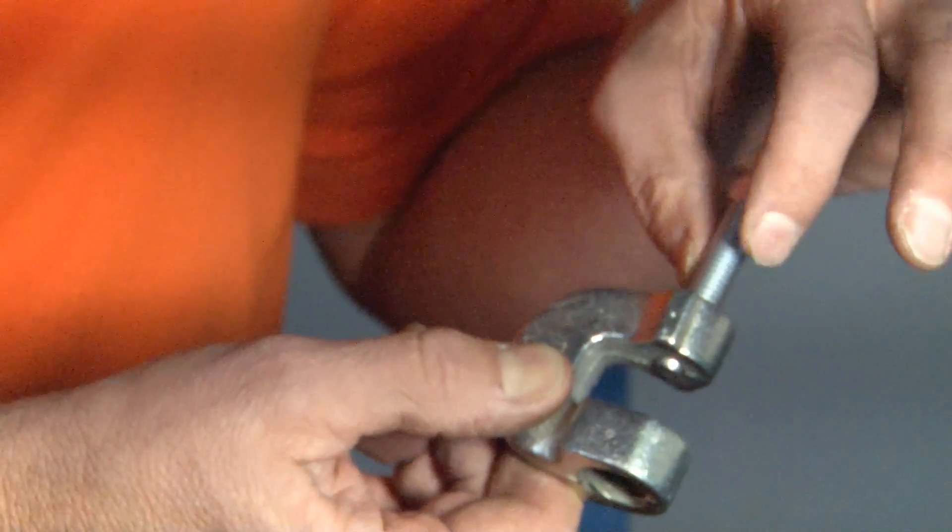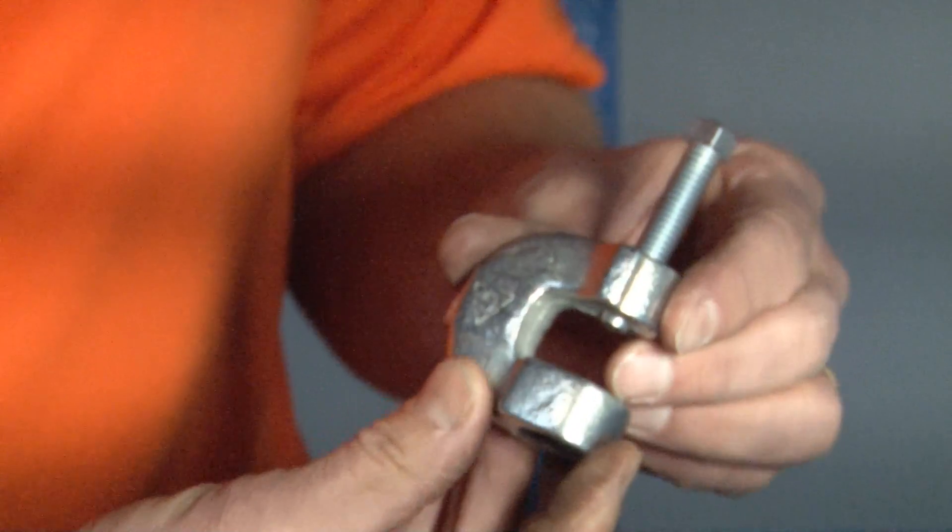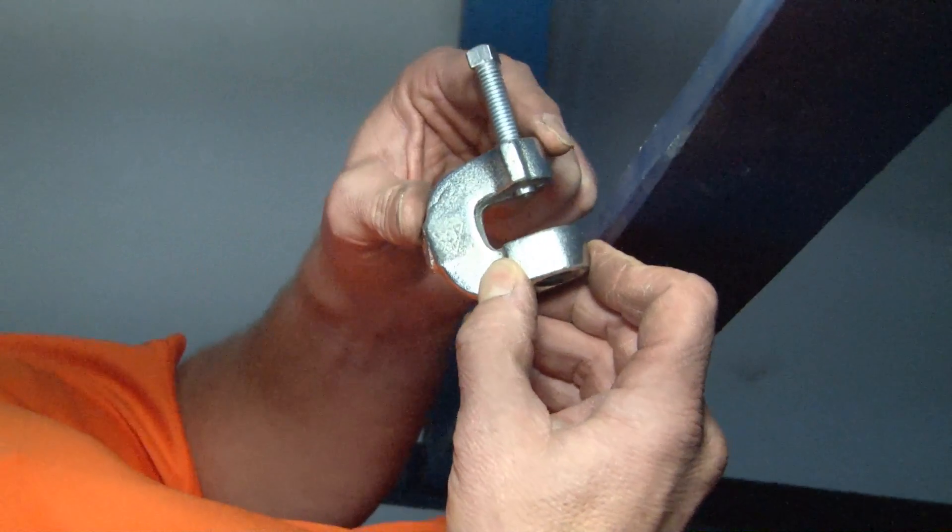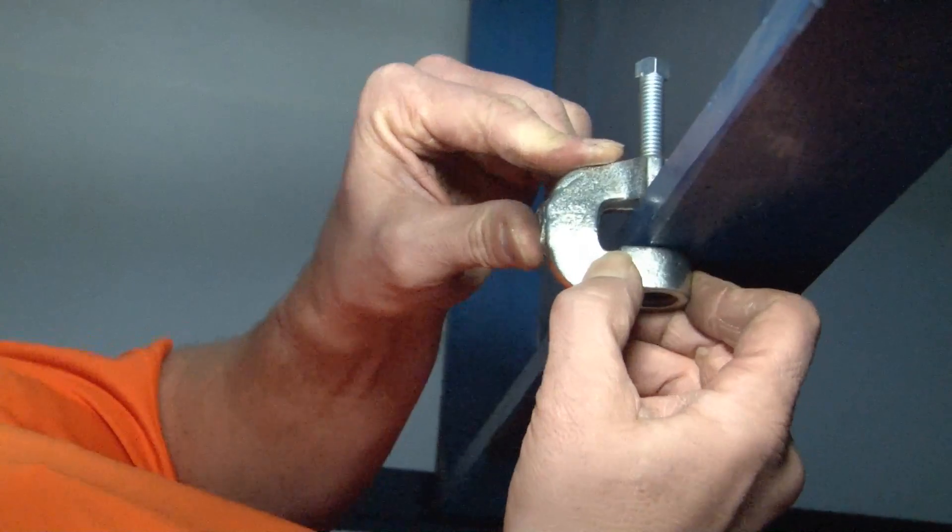It comes complete with a pre-threaded set screw made from hardened steel. The way these products install is quite simple. You align the jaw of the clamp with the edge of the beam and then you slide it into place.